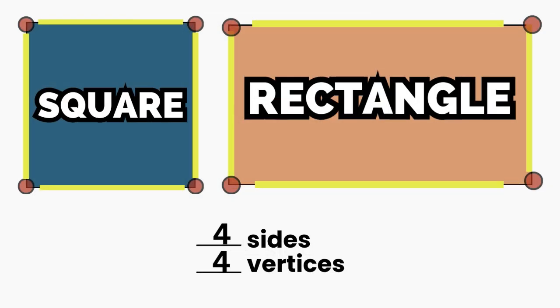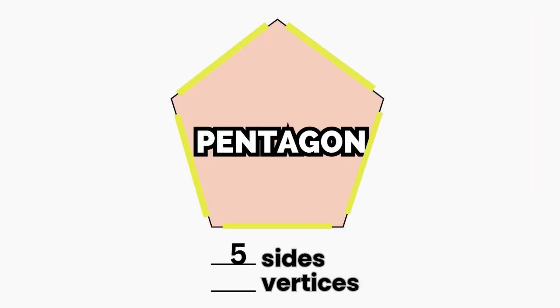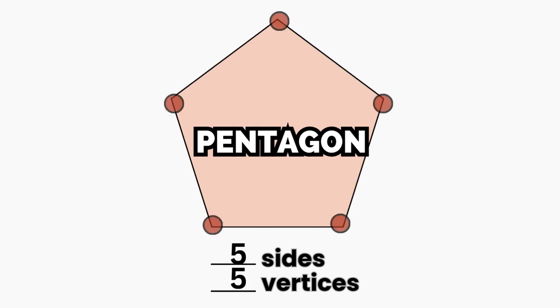A rectangle looks much the same, but two sides long, it's in the name. A pentagon has five straight sides, five vertices where lines divide.